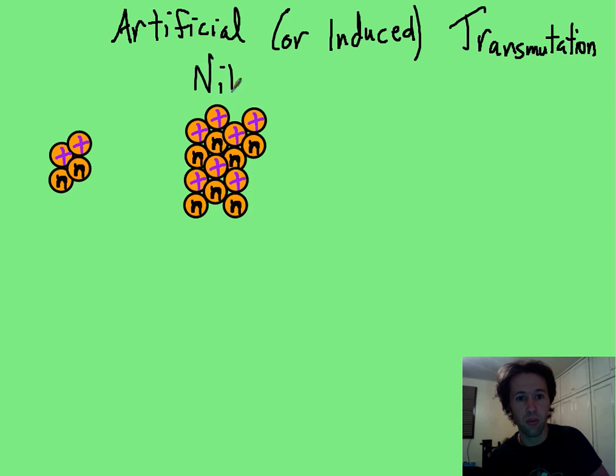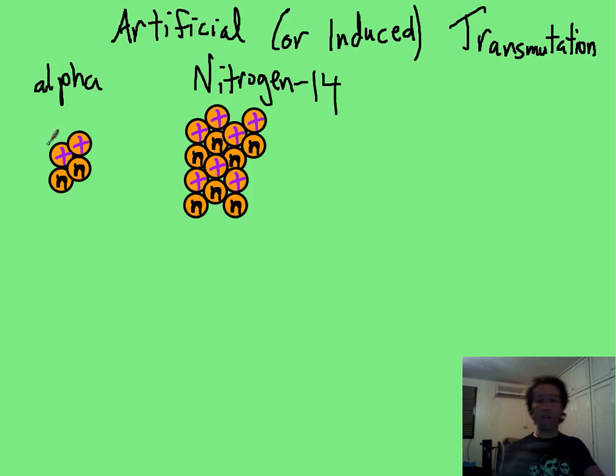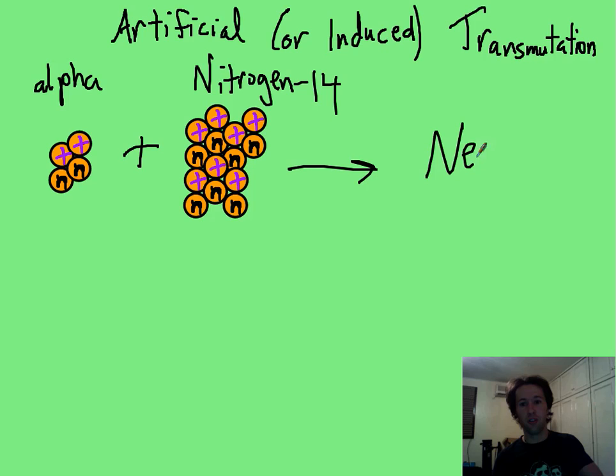So let's say that we've got something like nitrogen-14 here, and I drew 7 protons, I think, and 7 neutrons. And let's say that we're going to hit it with an alpha particle. You fire that alpha particle out of something. That's going to collide, and you're going to get some new stuff, new elements. And the equation for that is actually not very bad at all.